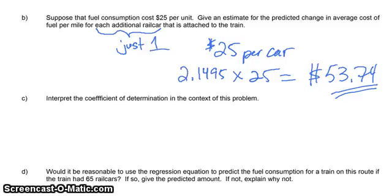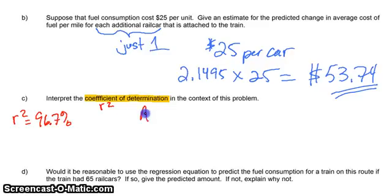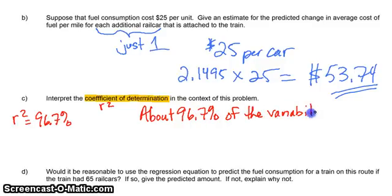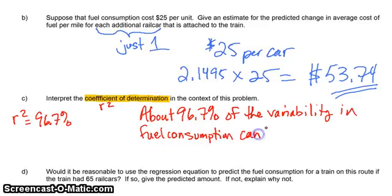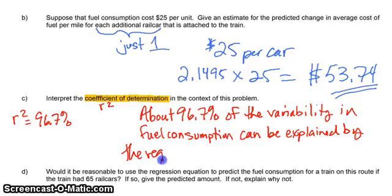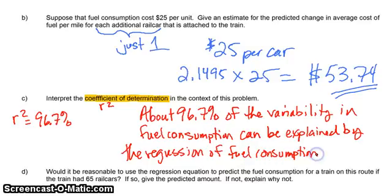Coefficient of determination — remember the sentence, remember this is R². Our R² value is equal to 96.7%. So we'd say: about 96.7% of the variability in fuel consumption — that's our Y — can be explained by the regression of fuel consumption on the number of rail cars.